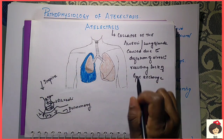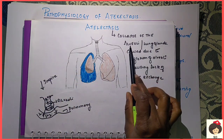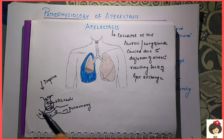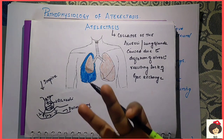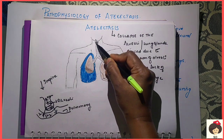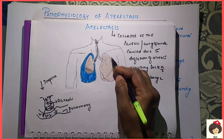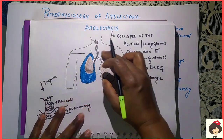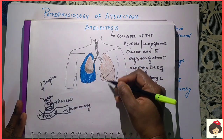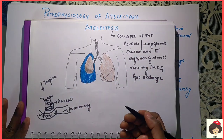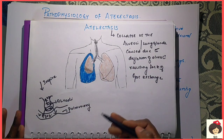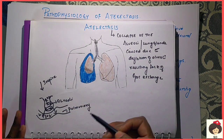So in Atelectasis, what happens is there is collapse of the alveoli. Collapse of the alveoli means the alveoli is not inflating. When oxygen is entering inside, the alveoli has to inflate — this is the normal lung. Alveoli will inflate so that they can do the work of gas exchange, meaning oxygen and carbon dioxide gases will get exchanged.